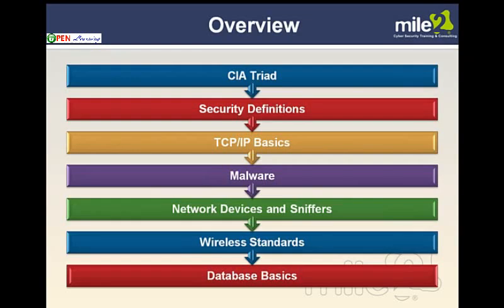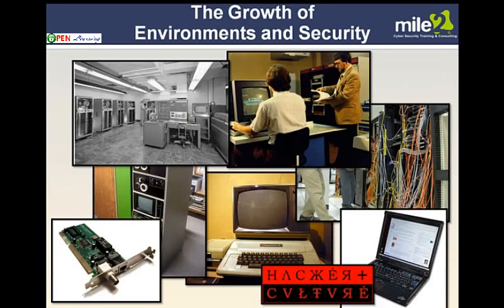In this chapter, we're going to look at the CIA triad — confidentiality, integrity, availability. We're going to look at security definitions, TCP/IP basics, malware, network devices and sniffers, wireless standards, and database basics.